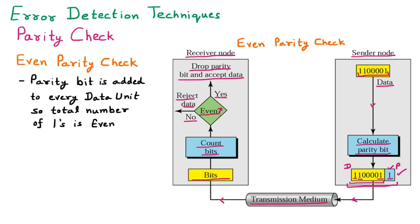Similarly, the second type is odd parity check. Odd parity check is the same as even parity, with one difference: in even parity the number of ones is even, while in odd parity the number of ones is odd. The parity bit is added to every data unit so that the total number of ones is odd.